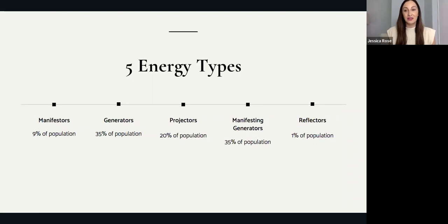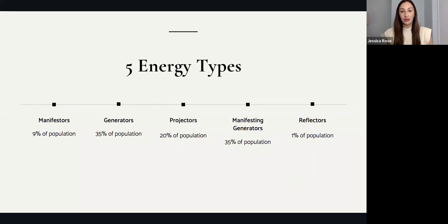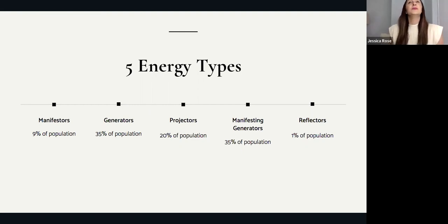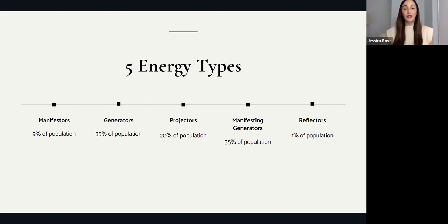We have five energy types of human design. They are: the Manifestors, making up 9% of the population; the Generators, 35%; the Projectors, 20%; the Manifesting Generators, 35%; and Reflectors, 1%. Every single energy type is needed — there is no energy type that is better than another, and there is not one that has more potential for success. Every single one is needed in our evolution and growth on this earth.